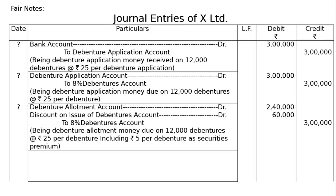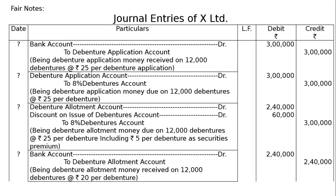Next entry — receipt of debenture allotment money: Bank Account debited to Debenture Allotment Account — being debenture allotment money received on 12,000 debentures at the rate of ₹20 per debenture. 12,000 × ₹20 = ₹2,40,000, both in debit and credit columns.